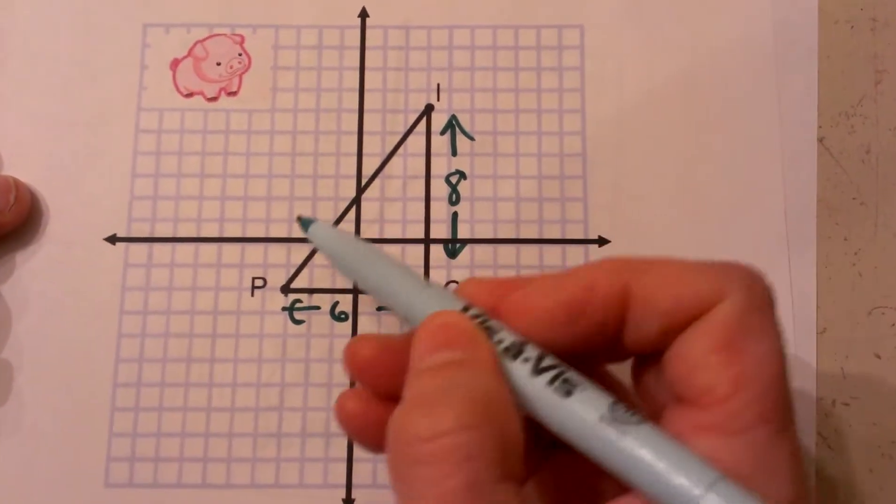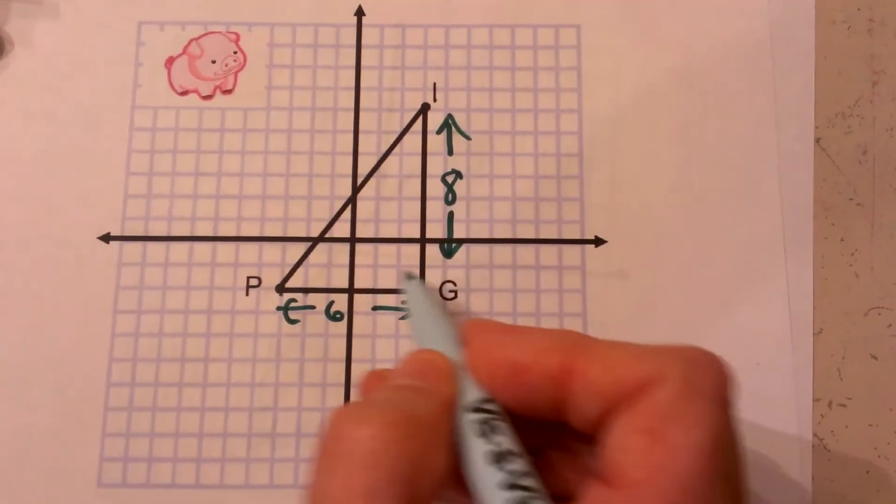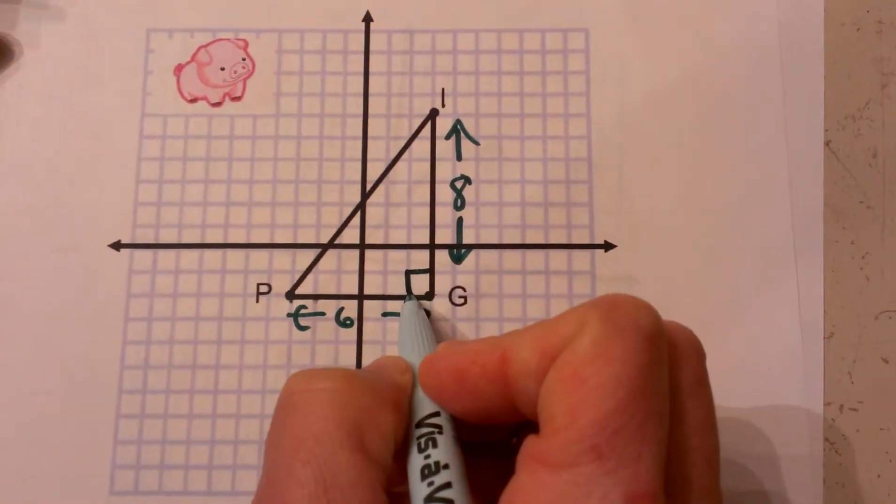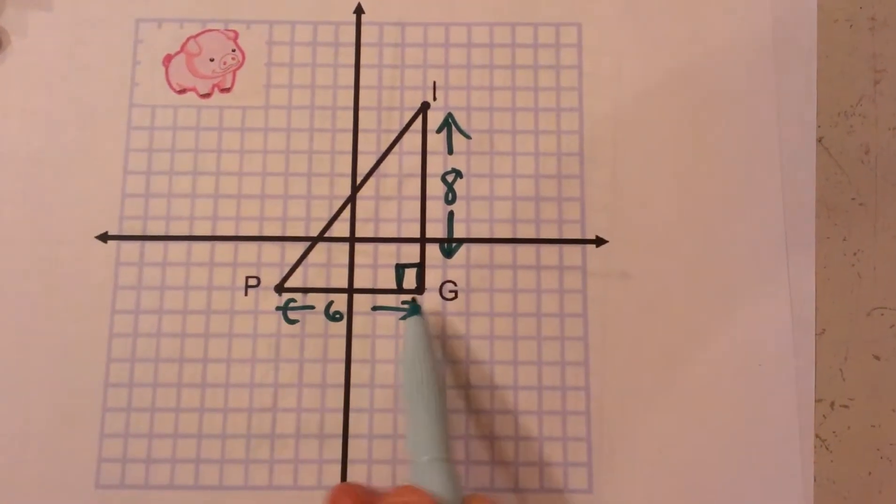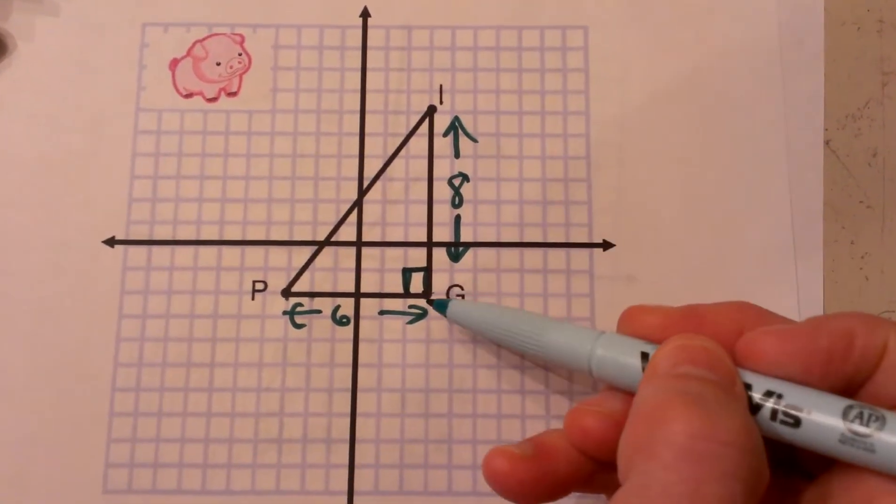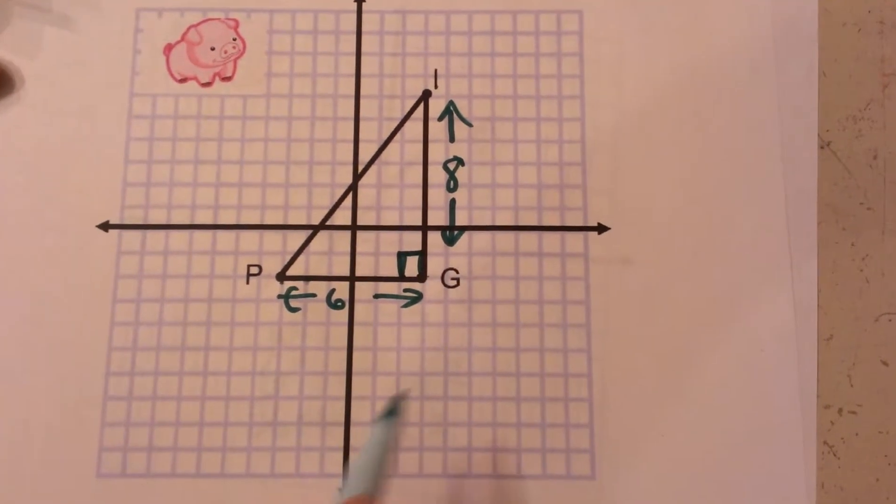Now I need to find the distance of PI. Well, since this is set up already you can see that we have a right triangle. So we can use the Pythagorean theorem using A squared plus B squared equals C squared. So let's go down and write our formula.